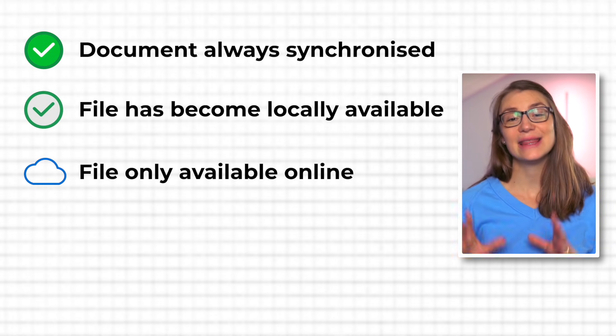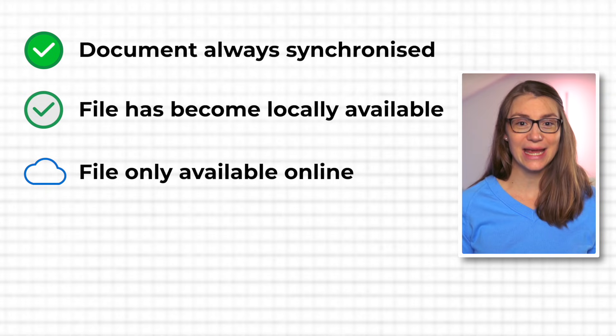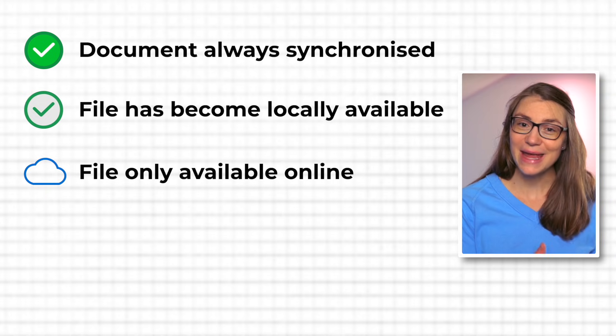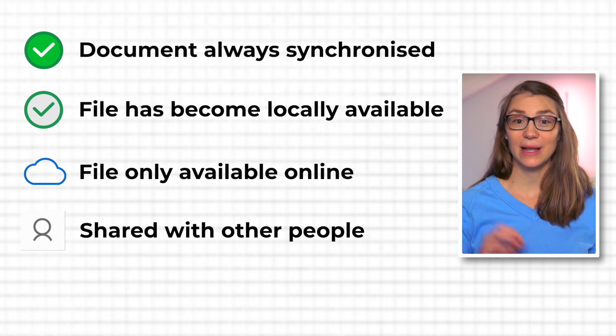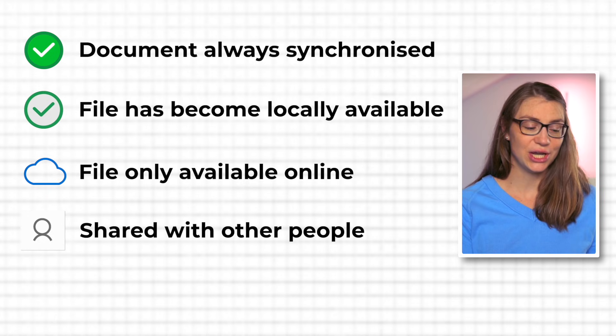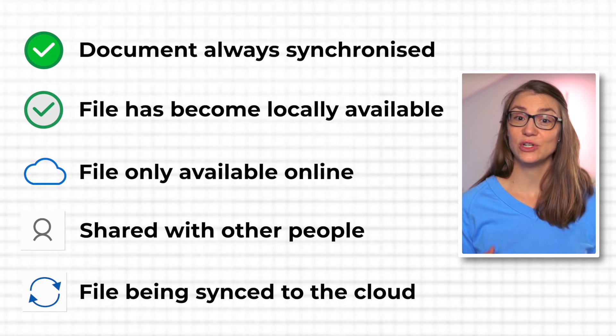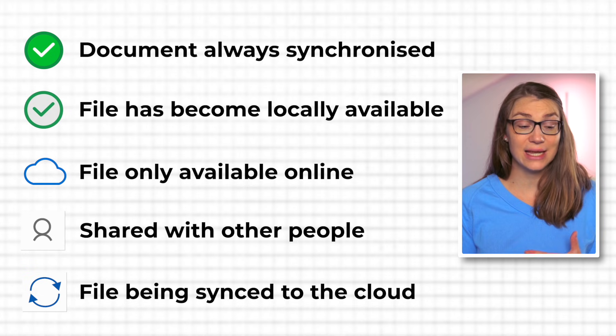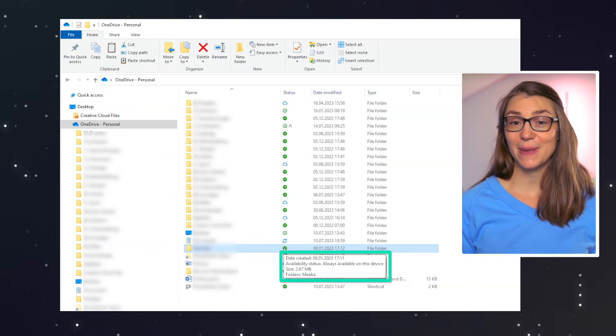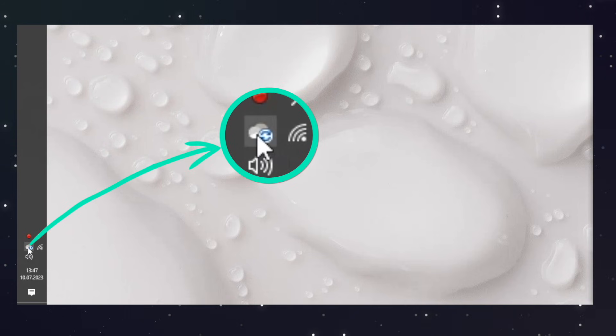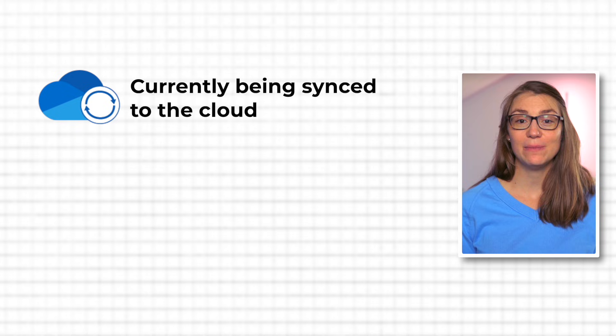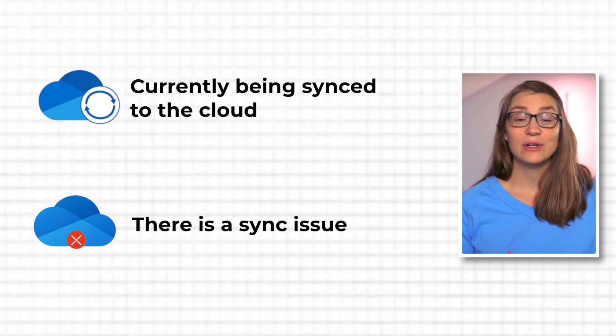Whenever you see a people icon, it means that this file or folder has been shared with other people. Another important symbol is the blue sync icon, which means that this file or folder is currently being synced to the cloud. You can also hover with your mouse above the respective icon and it tells you what it means. Those icons can not only be seen next to your files and folders, but also your OneDrive app icon in your taskbar might show one of those icons from time to time — mostly the sync icon meaning OneDrive is currently being synced, or a warning icon meaning there is a sync issue. Usually you can just click on the app symbol and it guides you through the bug fix.